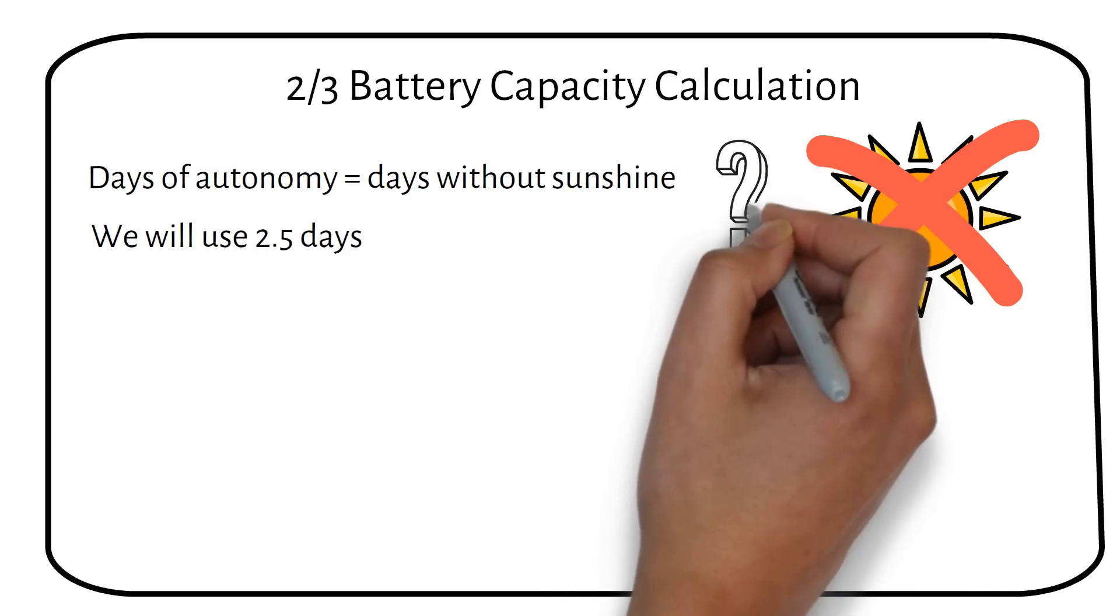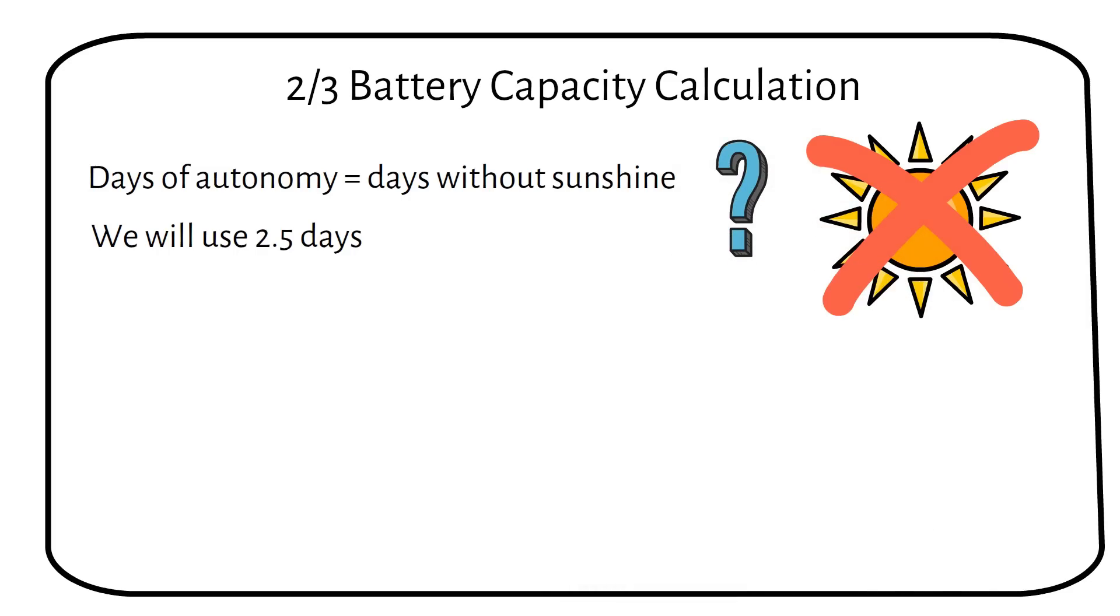How many days of autonomy would you prefer for your off-grid system? Do you prefer the standard 3 days, something more conservative or ambitious?